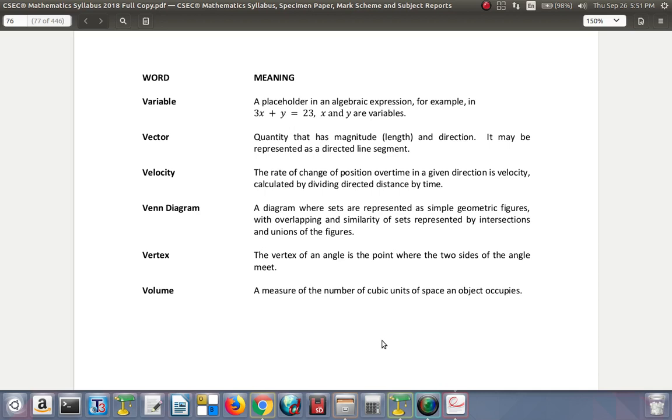Venn diagram: a diagram where sets are represented as simple geometric figures, with overlap and similarity of sets represented by intersections and unions of the figures. Vertex: the vertex of an angle is the point where the two sides of the angle meet, like the corner.